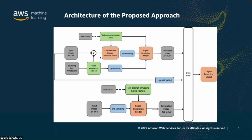Our architecture has two main blocks. The top block takes an input image with bounding boxes of various objects. We mask portions of the image and ask a classifier-free guided diffusion model to fill in the blank with specific items of interest, then send it to an upsampling super-resolution model to generate the final image. The bottom block uses the super-resolution model guided by text to produce different global features such as different weather conditions.